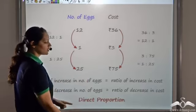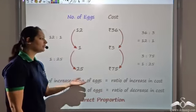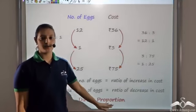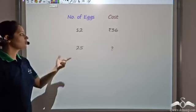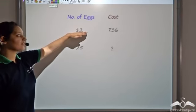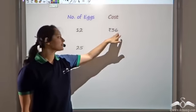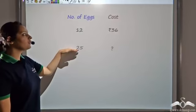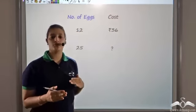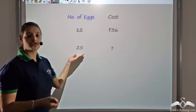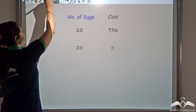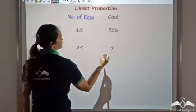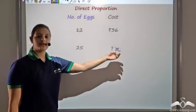So both ratios turn out to be equal — if you decrease the number of eggs, cost decreases in the same ratio; if you increase the number of eggs, cost increases in the same ratio. It is called direct proportion: direct because increasing one increases the other, and decreasing one decreases the other. It is called proportion because two ratios are equal. Now let's assume the unknown cost is a variable x.